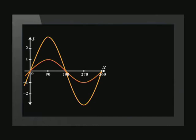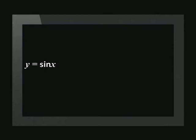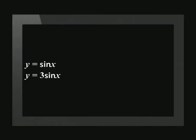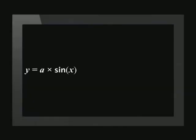Let's look at the equation of the new graph. The standard graph has the equation y equals sine x. We wanted the amplitude of the graph to be 3 times bigger than the standard graph. To do this, we multiplied all the y-values by 3, giving us the new equation y equals 3 times sine x. To change the amplitude of the function, we multiply the y-values of the standard graph by a, and write this equation as y equals a times sine x.